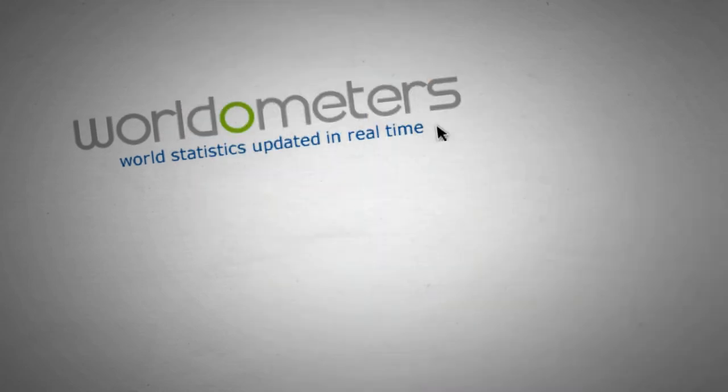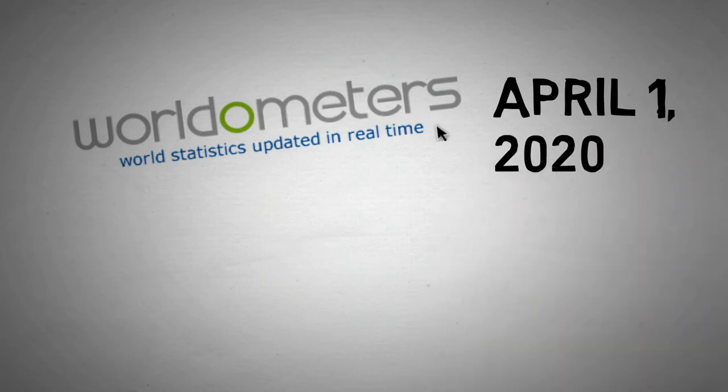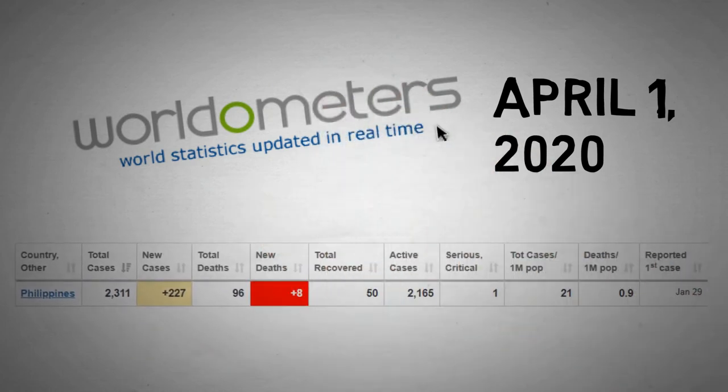According to a site called World Omitters, which is a site that tracks the cases of affected countries, the Philippines as of now, April 1, 2020, has a total case of 2,311, 227 new cases, total deaths of 96, active cases of 2,165, one serious critical case, and recovered a total of 50 people.